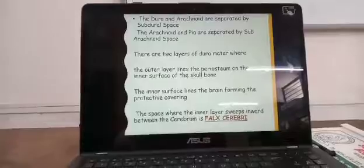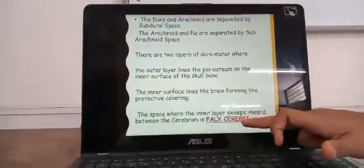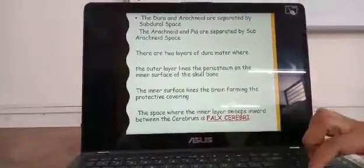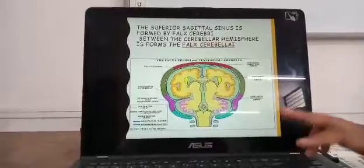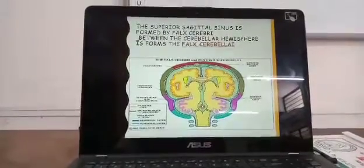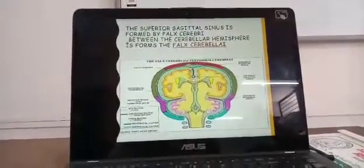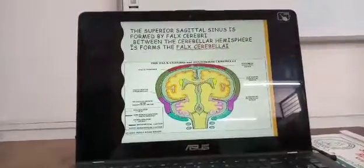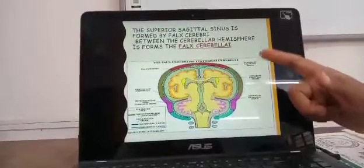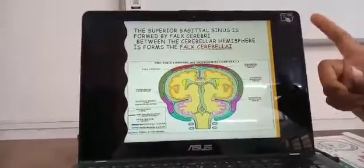The cerebrum is the front part of the brain. The space between the inner and outer layers of dura mater at the cerebrum is called the falx cerebri — spelled F-A-L-X cerebri. The superior sagittal sinus is formed by the falx cerebri. A sinus is simply a space. Because it is located at the front centre, it is called the superior sagittal sinus — sagittal meaning centre.